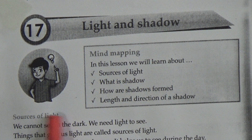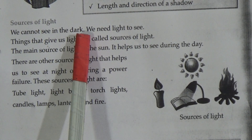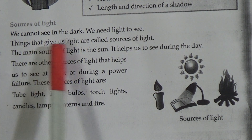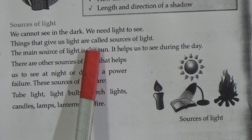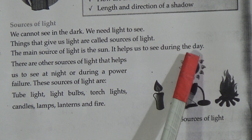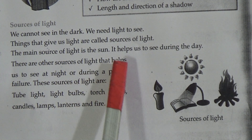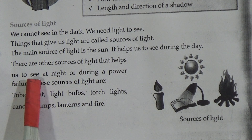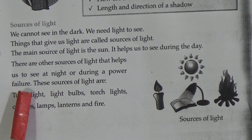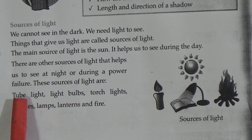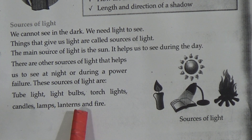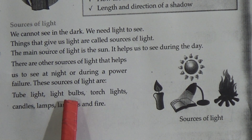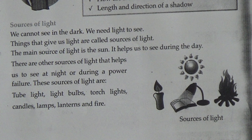Light and Shadow. Sources of light — we cannot see in the dark. We need light to see. Things that give us light are called sources of light. The main source of light is the sun. It helps us to see during the day. There are other sources of light that help us to see at night or during a power failure. These sources are tube light, light bulbs, torch lights, candles, lamps, lanterns, and fire. But the main source of light is the sun.